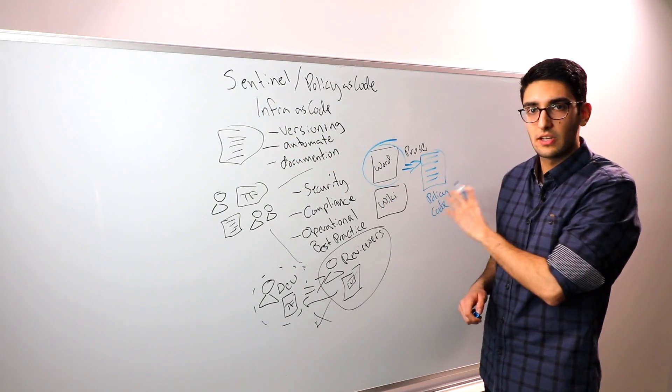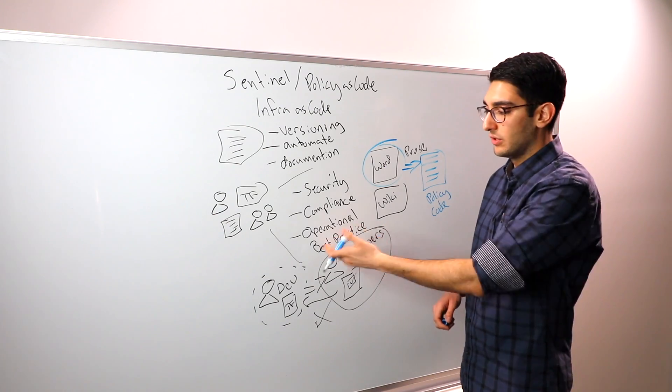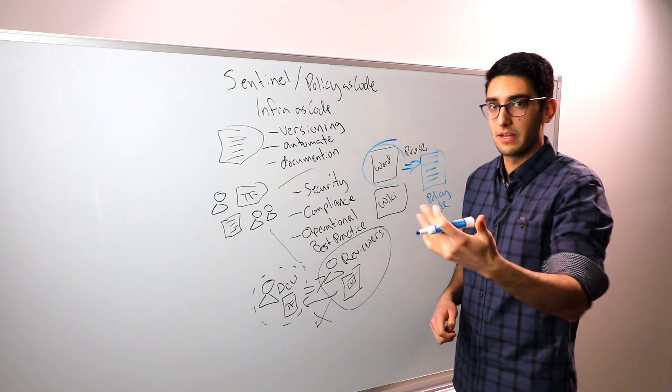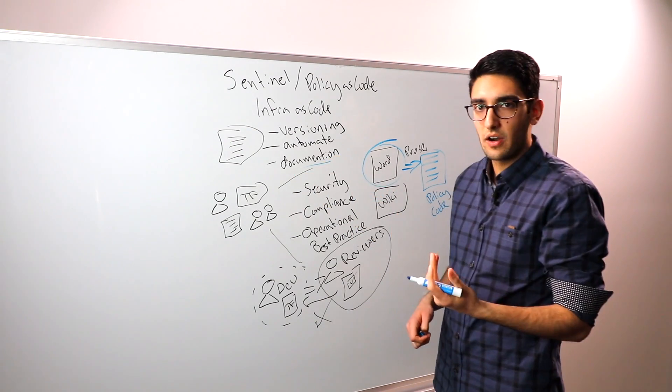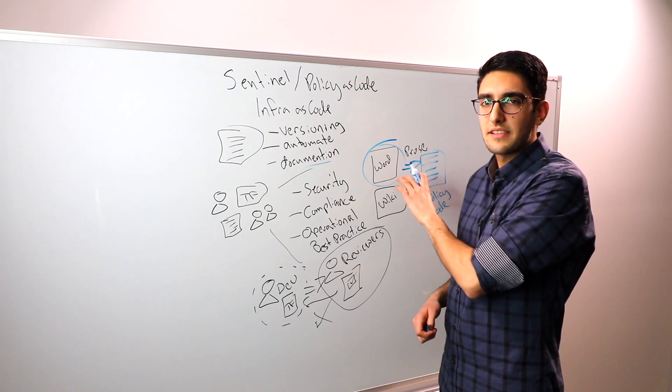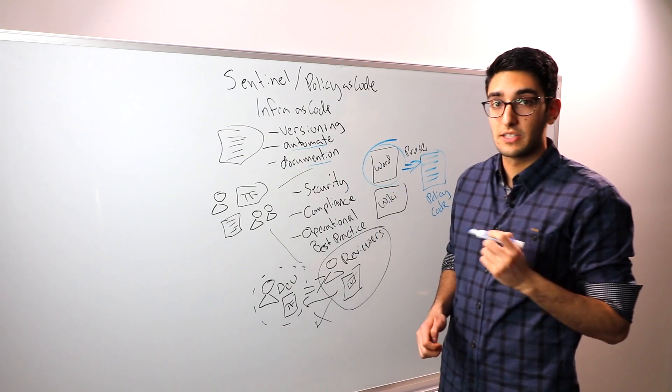We can take this policy code document, we can version it and evolve it over time. As we add new operational best practices, we can incrementally refine what the policy is. But we also get clear documentation of what these are in a way that's not necessarily English language prose. But the key becomes, we now have the ability to automate it.